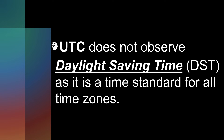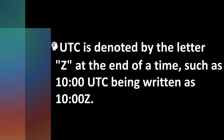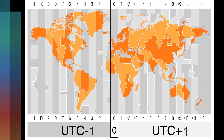UTC is denoted by the letter Z at the end of a time, such as 10 UTC being written as 10Z. It is often used as a reference time against which other time zones are offset.